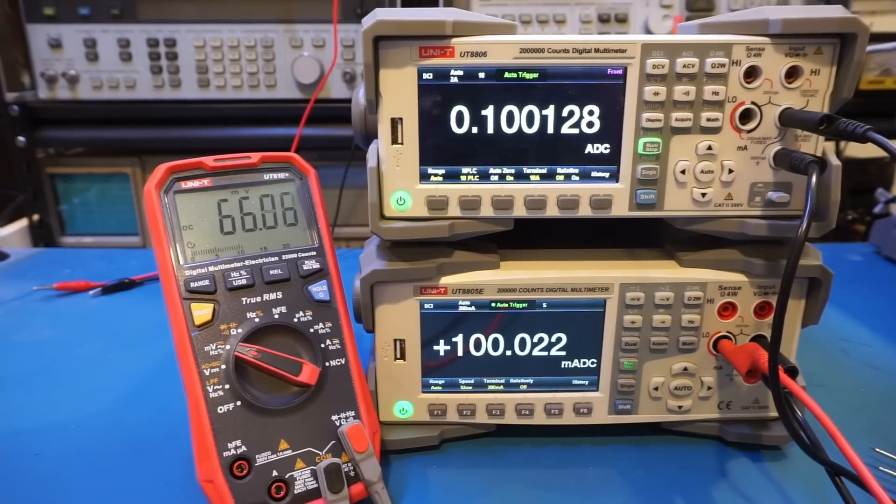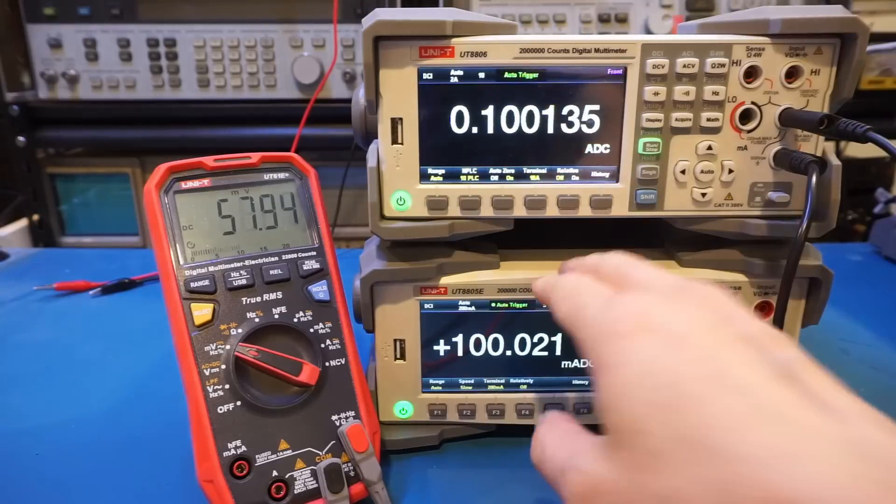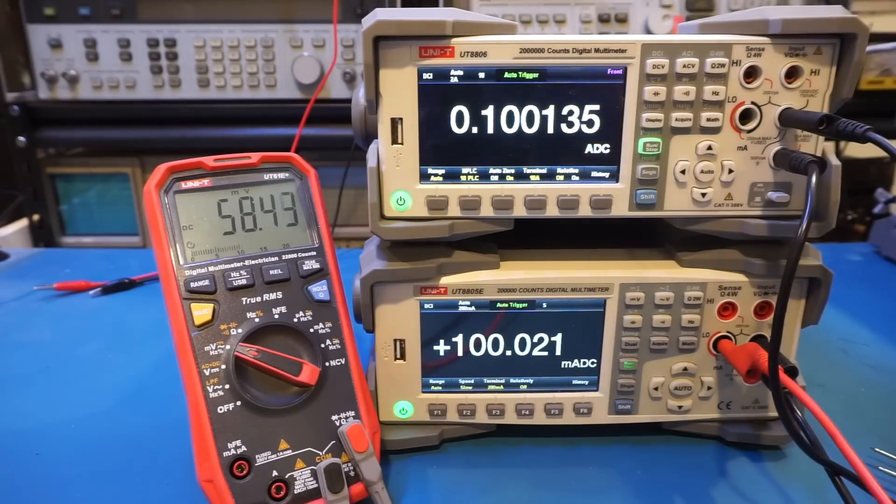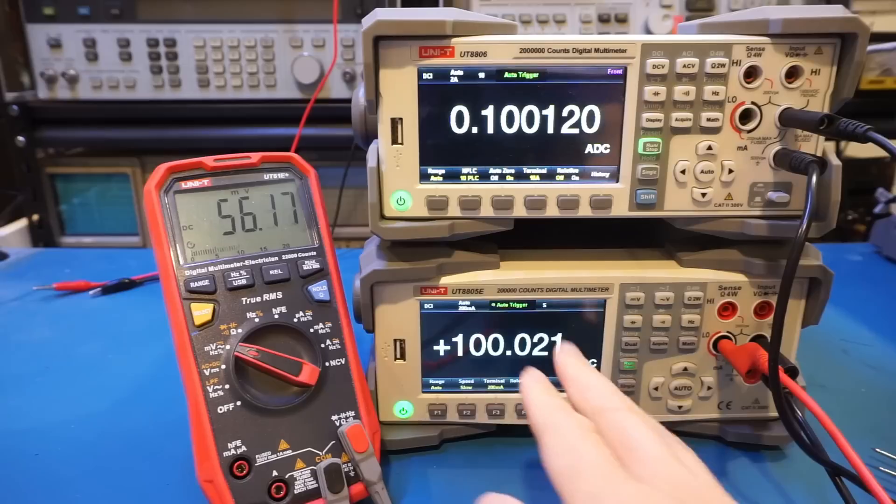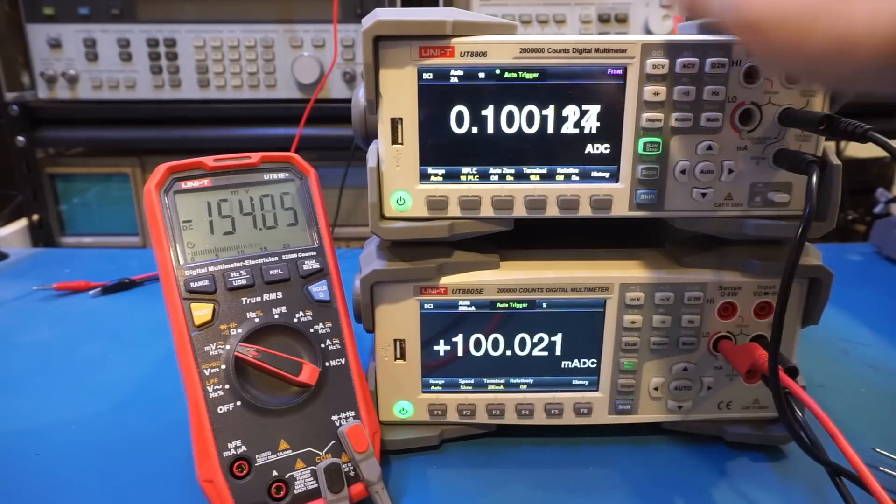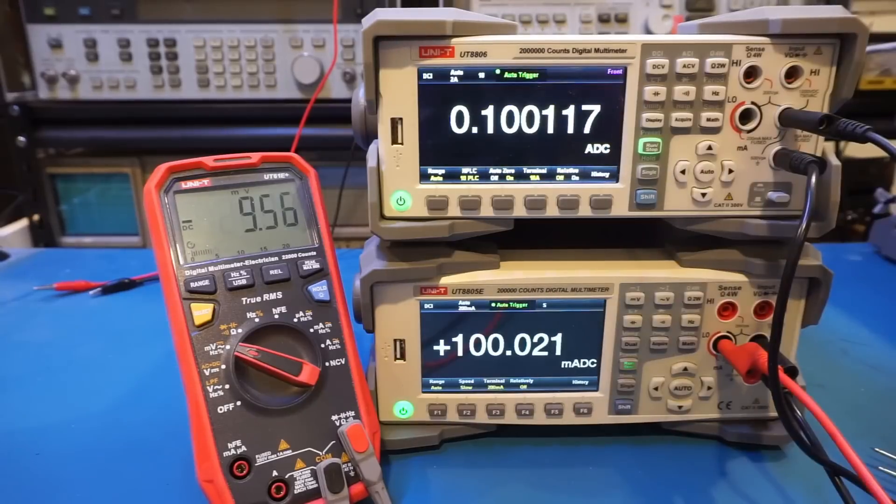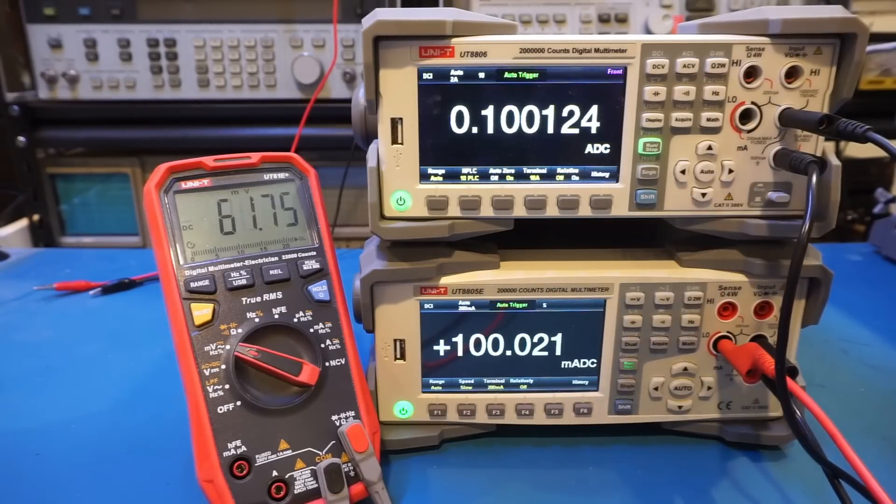So you can see right now we're measuring a 100 milliamp current using both the meters 8806 and 8805. The meters are put in series. And the difference is that on the 8805E, we're using the milliamp range, and the 8806E, we're using the amp range for measurement. So let's take a look at the voltage drop here.